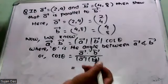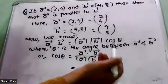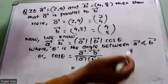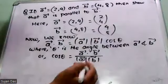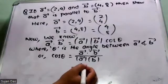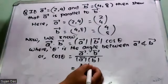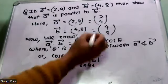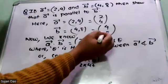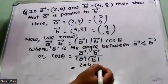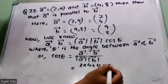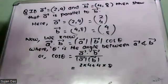Let's find vector A dot vector B: 2 times 4 plus 4 times 8 equals 8 plus 32 equals 40.